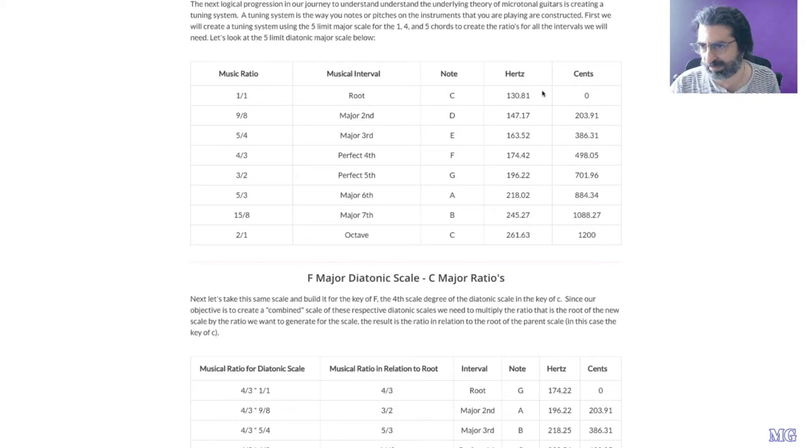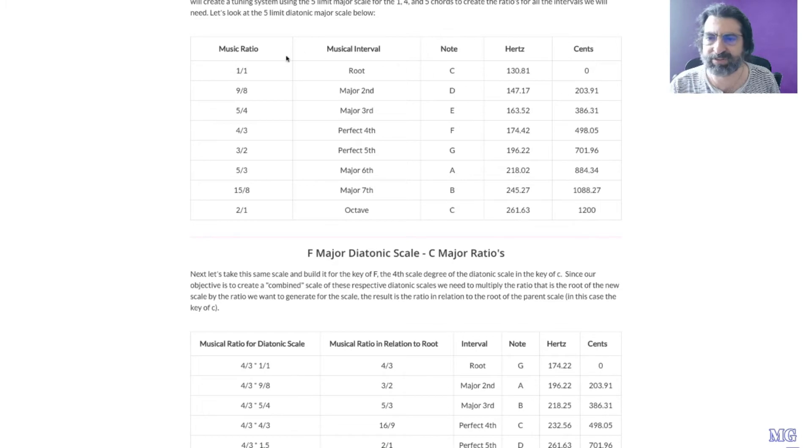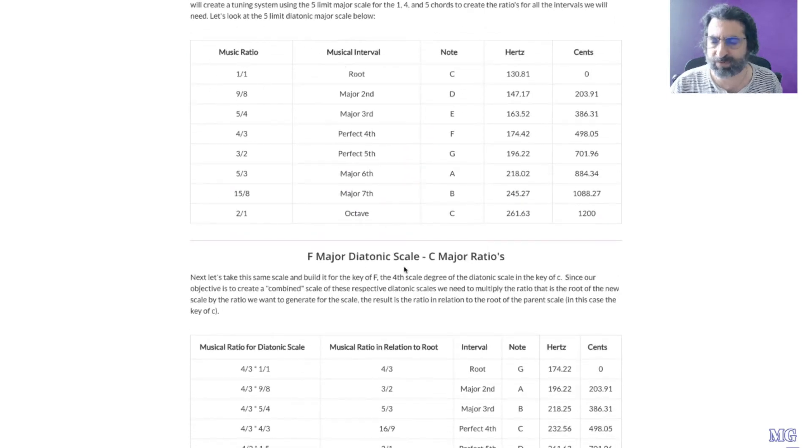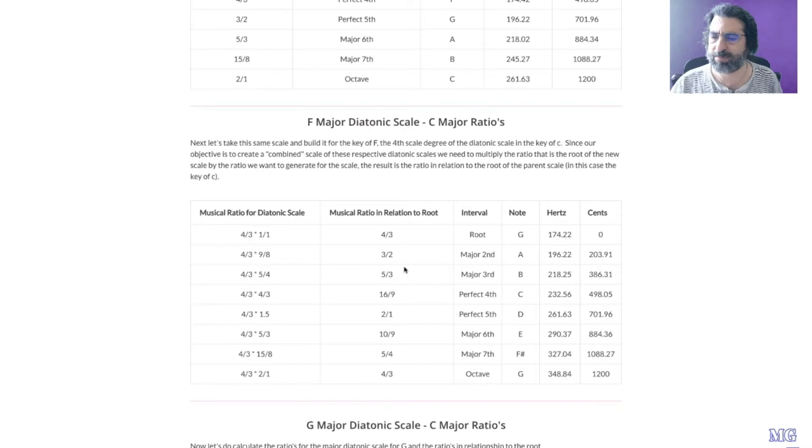At 2 over 1. Now I'm using the basic C MIDI key 48, so I think that's the 5th octave of C, and the hertz value for that is 130.81. These cents are in relationship to the root. Now if we take our F major, we're going to take that same scale, we're going to times those ratios by 4 over 3 to get that musical ratio in relationship to the 1 over 1, which we'll use for our combined scale.